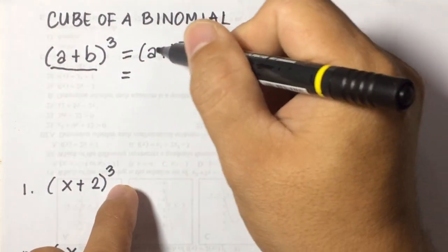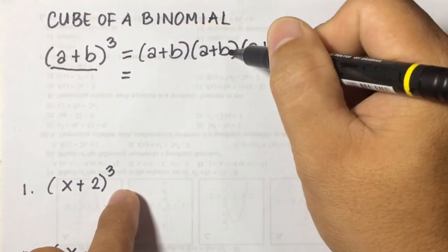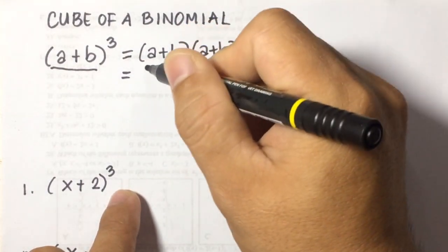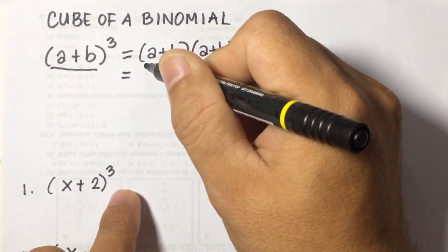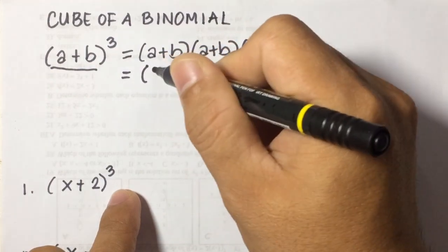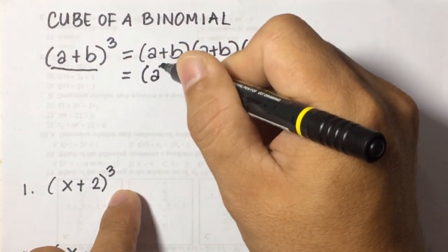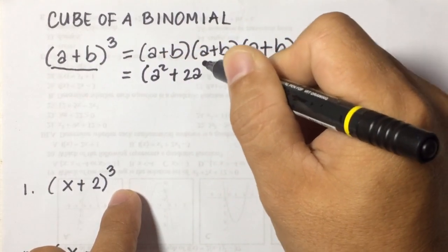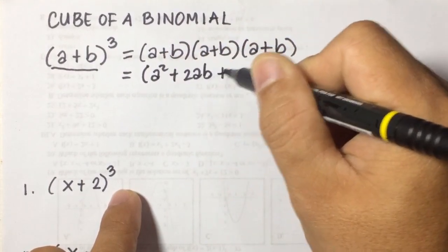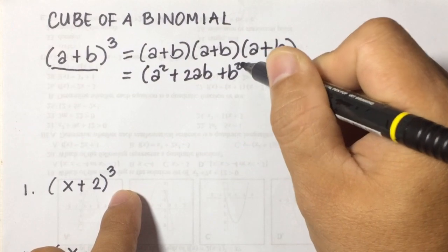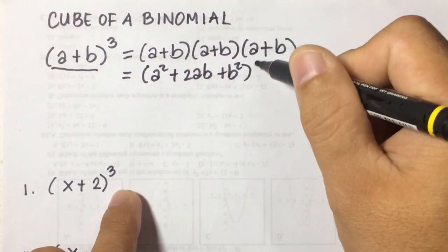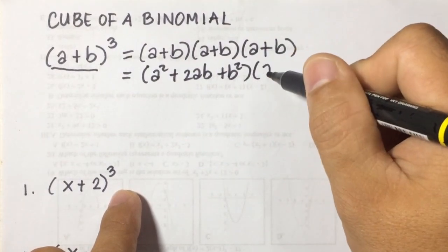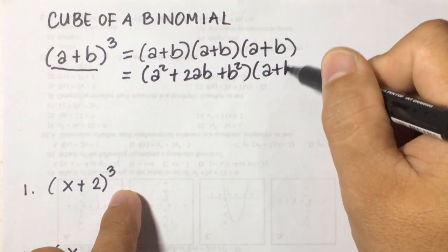Now, the quantity of a plus b times a plus b is just the same as a squared plus 2ab plus b squared, then we multiply that result by the remaining quantity of a plus b.